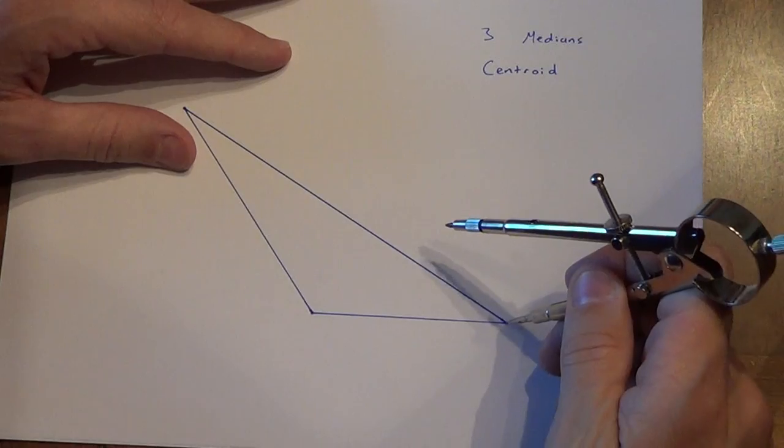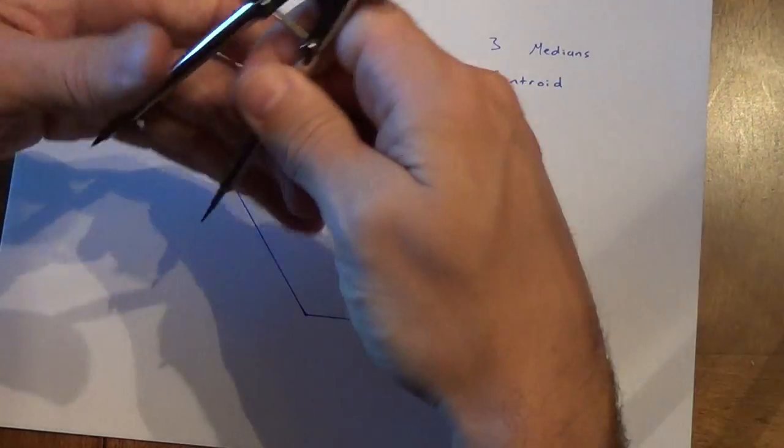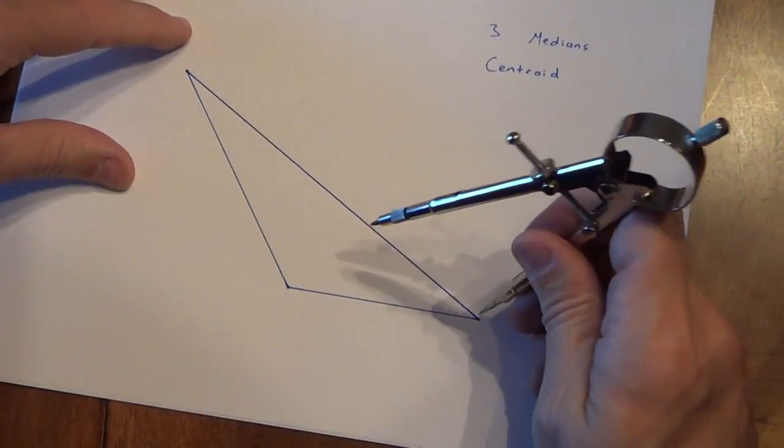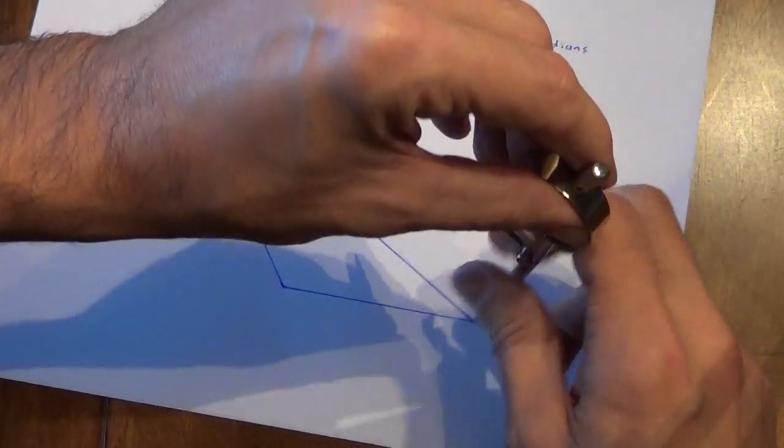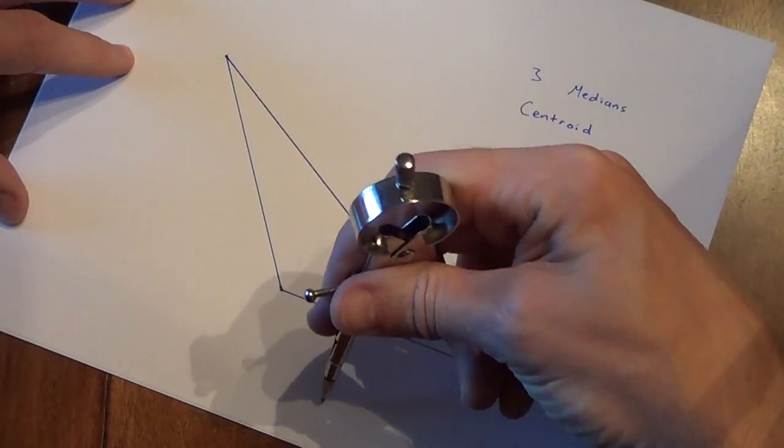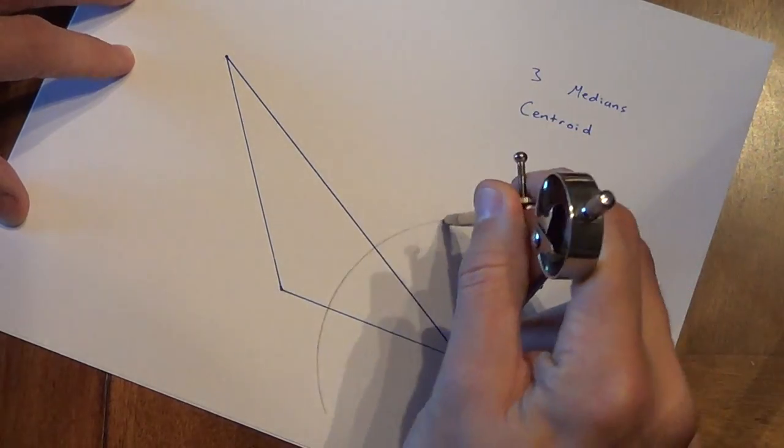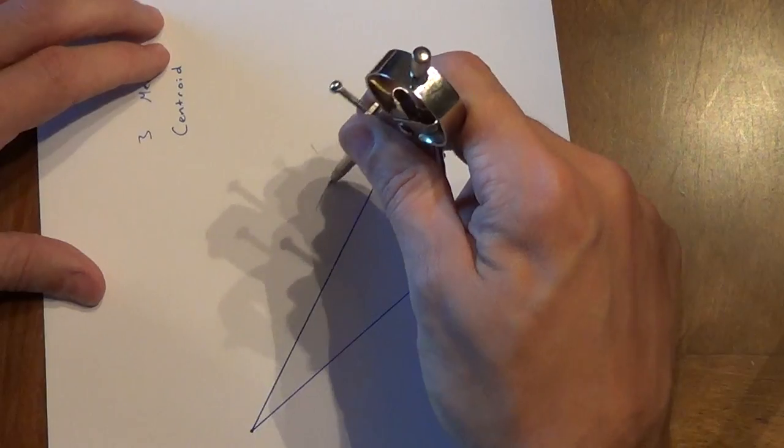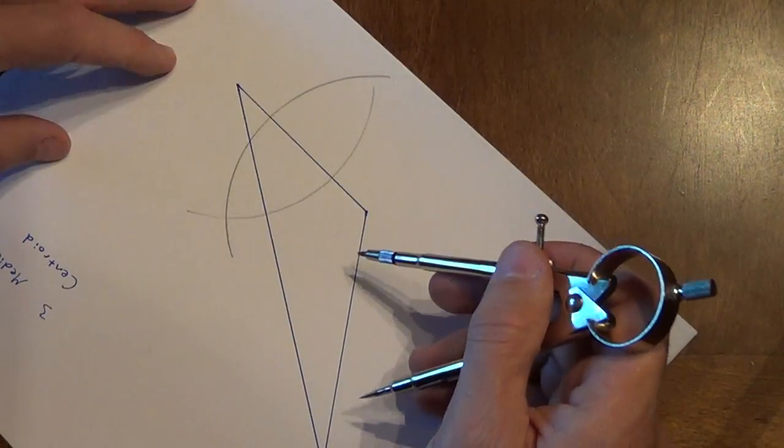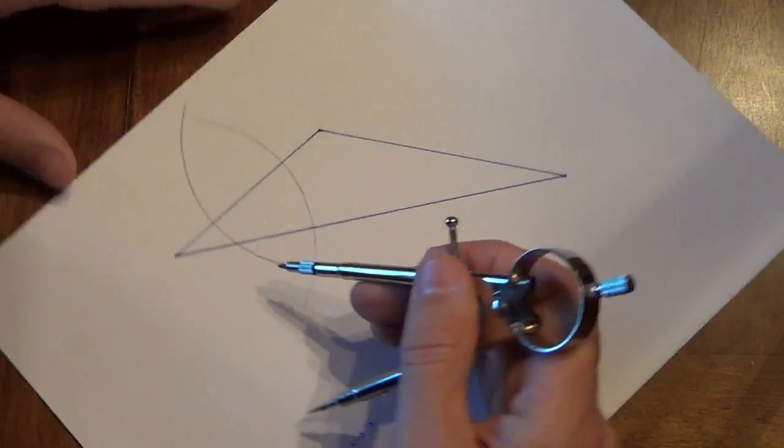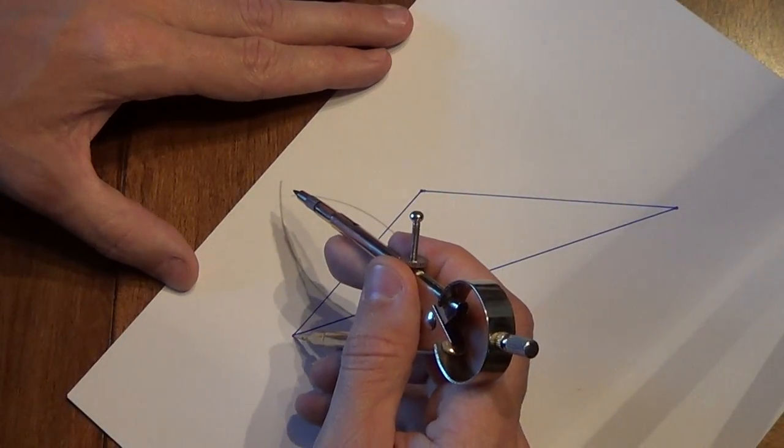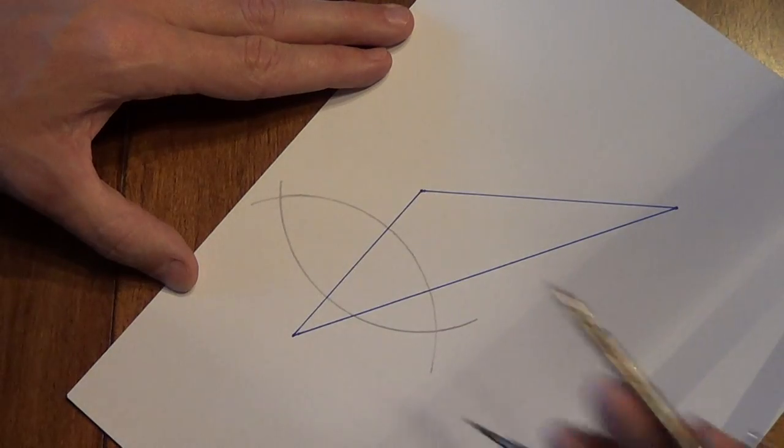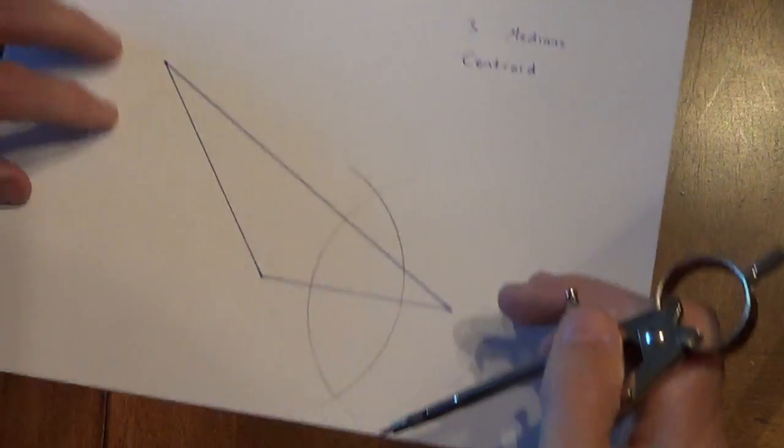Once again, we're going to do perpendicular bisector compass work, so make sure this is open more than half. I'm going to draw my football again, just like we did for a mid-segment. Okay, so first arc, second arc, and you might notice that these didn't intersect because I didn't draw the first arc long enough. That happens sometimes. So all we need to do is go back to our first end point and draw that arc just a little bit longer. We haven't changed our compass length at all, so it's not going to be a problem.